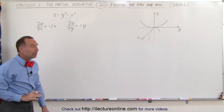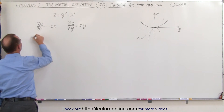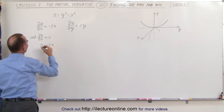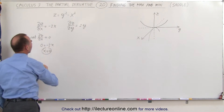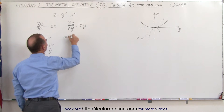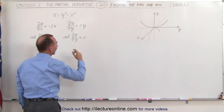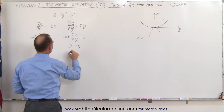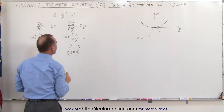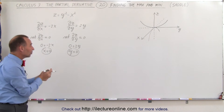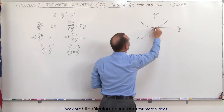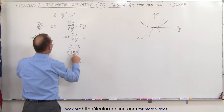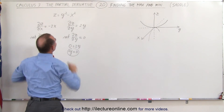To find the critical points, we set those equal to zero. Setting the partial of z with respect to x equal to zero gives us 0 = −2x, which implies x = 0. Similarly, setting the partial of z with respect to y equal to zero gives 0 = 2y, which implies y = 0. So when x = 0 and y = 0, we find a critical point right at the origin. Plugging back into the original function, z = 0 as well — that's why it's the origin.